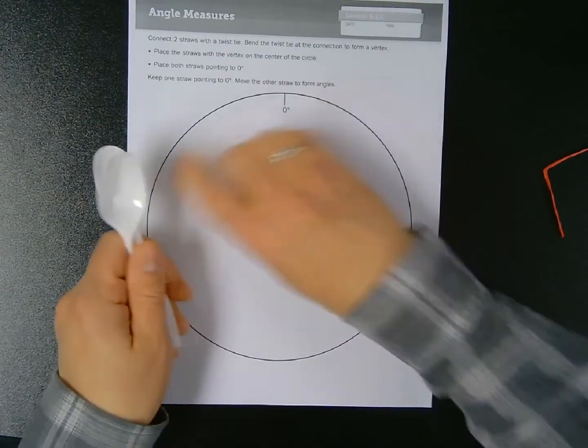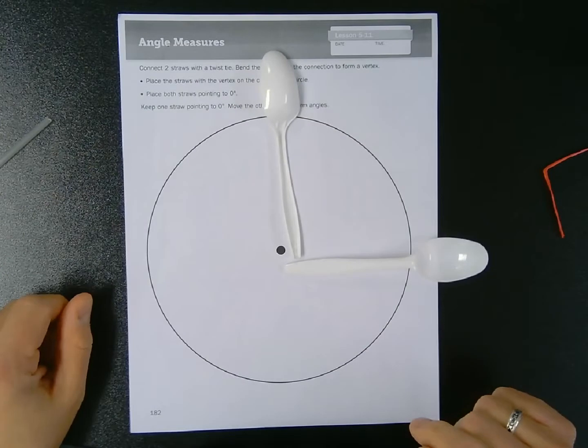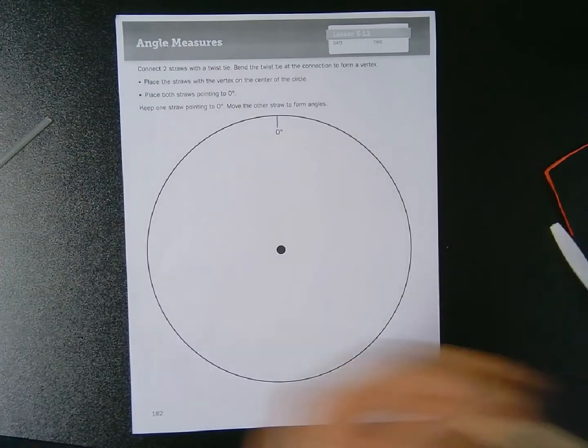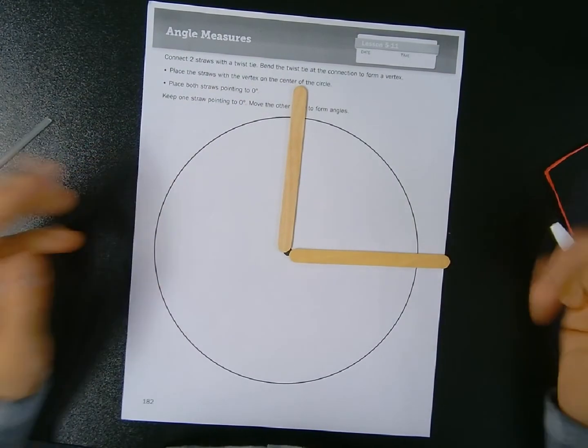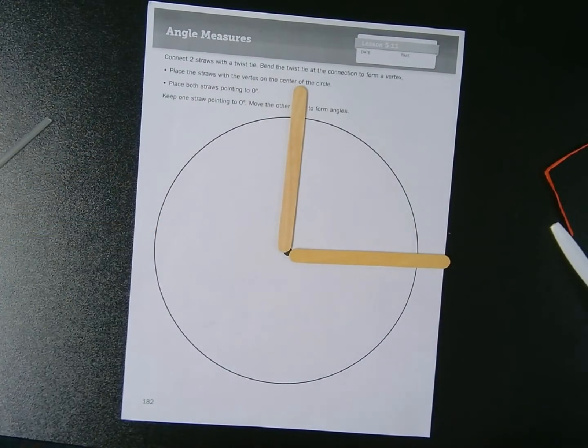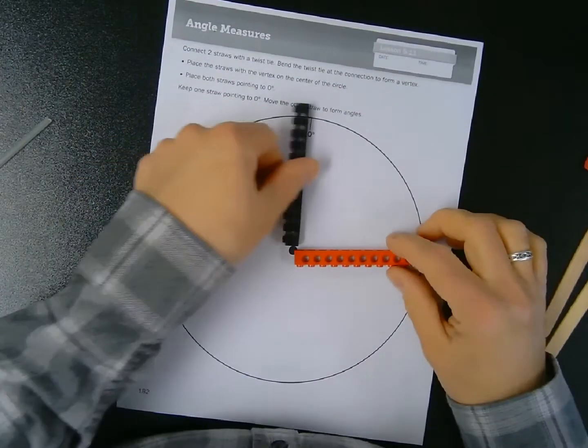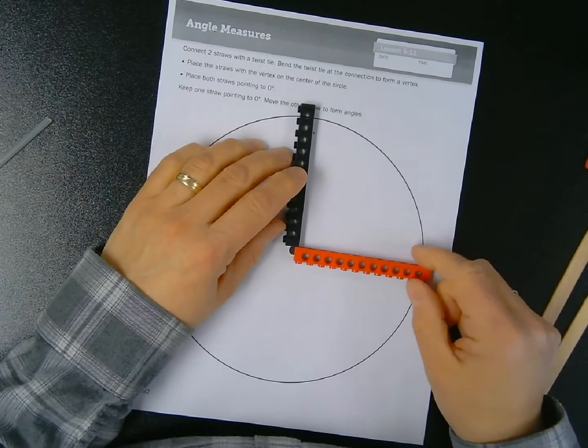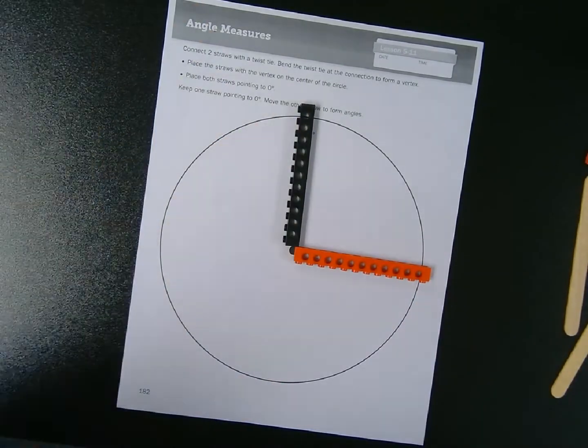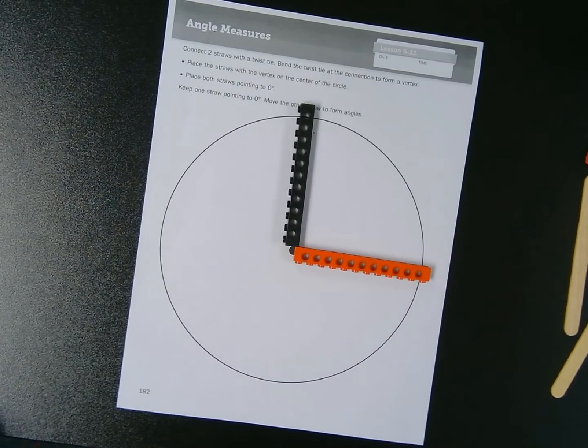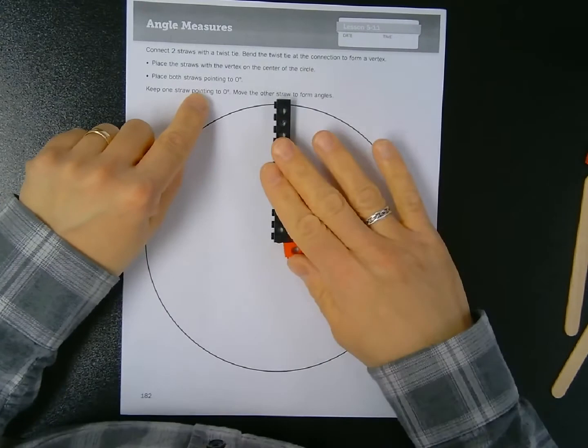Well, it doesn't have to be straws, friends. Any two straight objects that would duplicate a line segment or be a proxy for it will work. For example, a pair of spoons would serve as two line segments, or maybe some popsicle sticks, or maybe you're like me and you have Legos at home, so you can just pick two long Lego bricks.